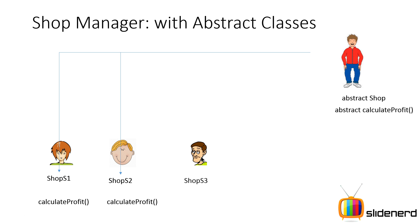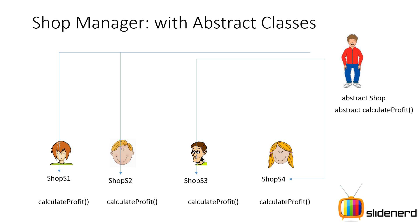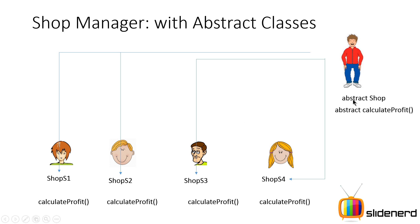Shop 3 and Shop 4 repeat the same pattern. What's the basic idea? Look at how uniform they are — calculateProfit is the same method name used in all four shops. What changes is how the profits are calculated. Shop 1 sells groceries, so profit calculation depends on vegetable prices and other items. Shop 2 sells stationery — profit depends on items like books, papers, and other goods. Shop 3 and Shop 4 similarly have their own basis for calculation.